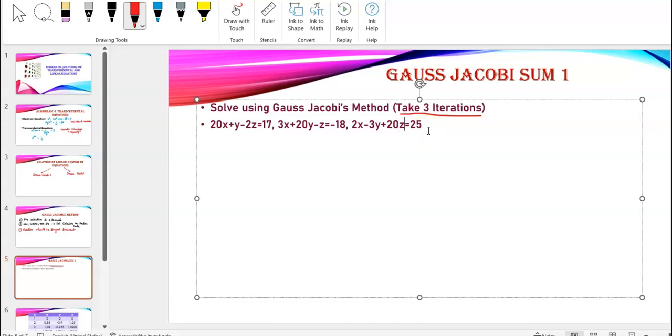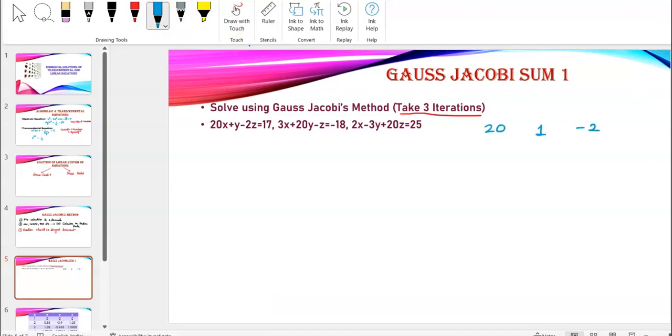Now, once I get this, what if I write this in a matrix format? I'll get 20, 1 minus 2. I'll get a 3, a 20, and a minus 1. I get a 2, a negative 3, and a 20. Now, observe, everywhere in the diagonal, the number may not be same. Here, it is same. It is 20. Always, it may not be same. But the number in each row, the largest number is coming at the position 1,1, 2,2, 3,3.